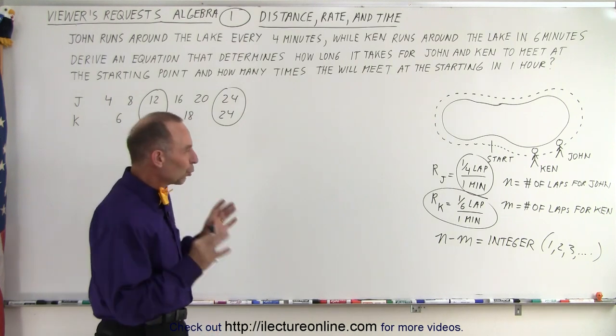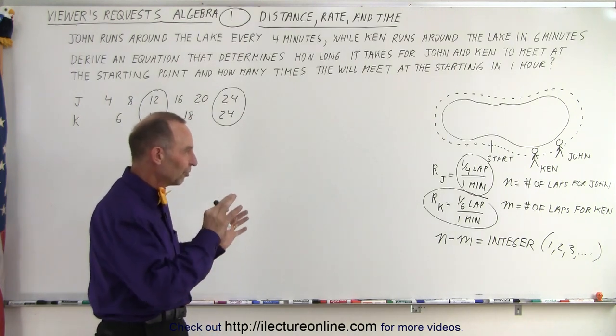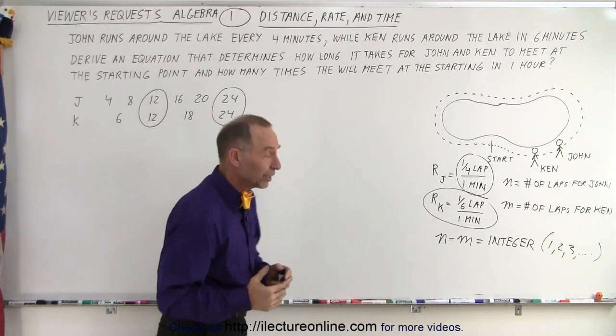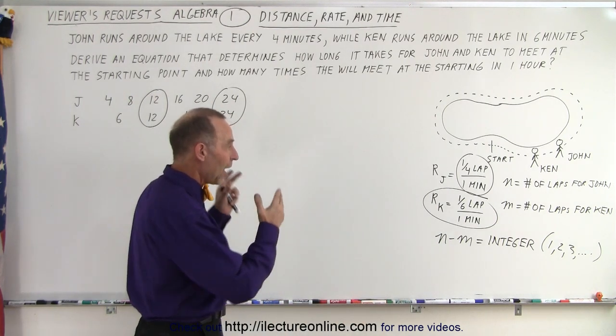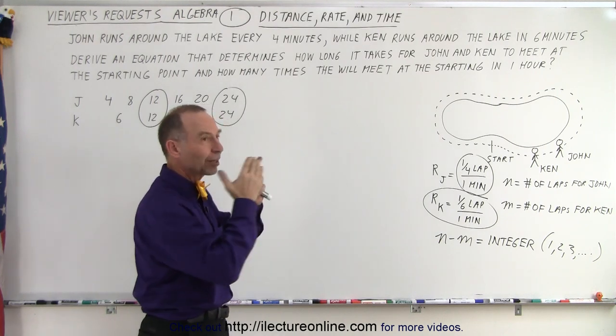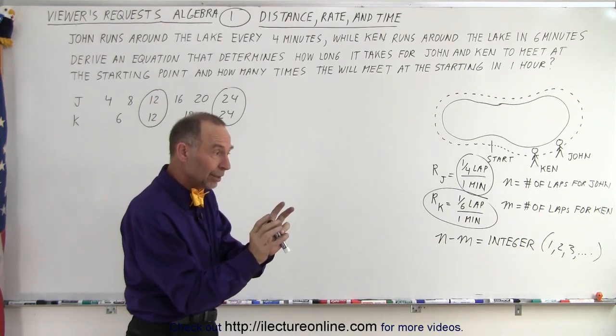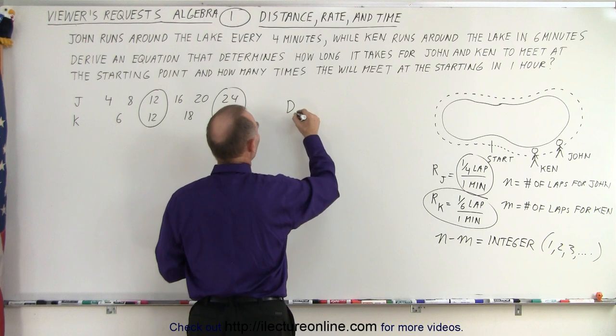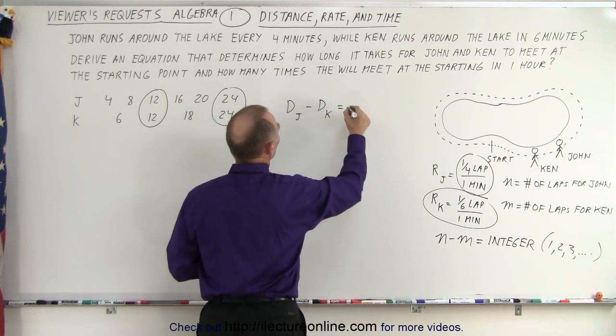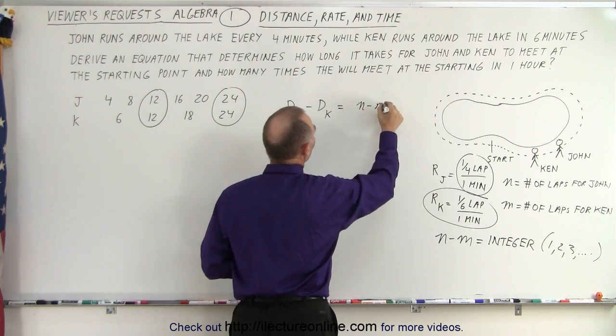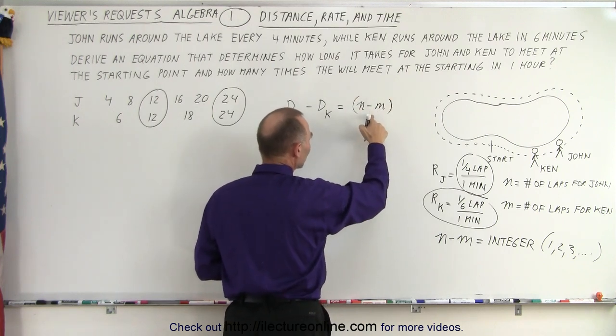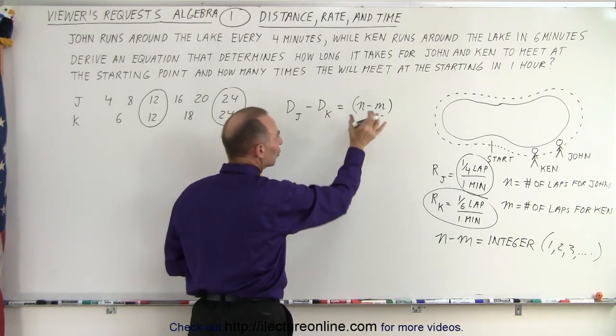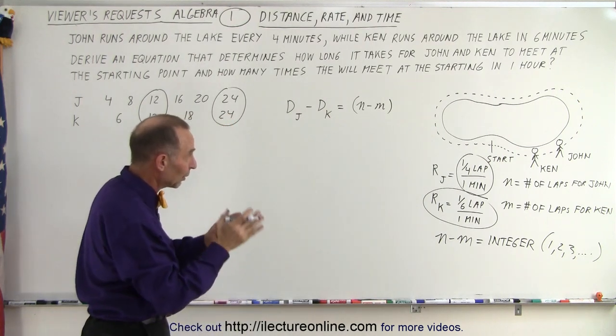Now we need to come up with an equation that expresses the difference in travel. The difference in travel is how many laps one runs more than the other. How far John travels minus how far Ken travels. When that difference is one lap, John has lapped Ken. So the distance of John minus the distance of Ken is going to be equal to N minus M, and N minus M could be one, or two, or three, or four, whatever it may be, such that the difference between their distance equals an integer number of laps, and each time it's an integer number, they will reach the starting point.